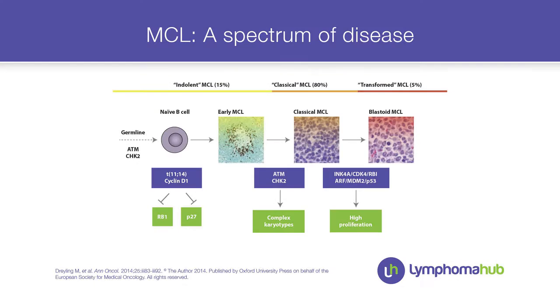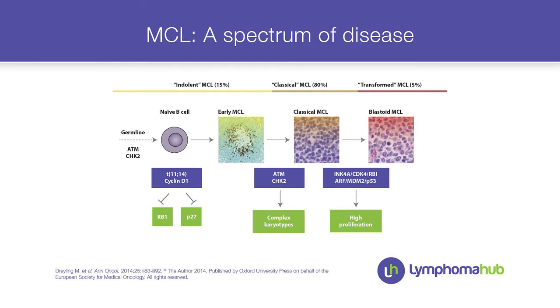What is special about mantle cell lymphoma? We have to be aware that this is a spectrum of disease. There are some indolent cases, but it's fair to say these only represent 10% of cases. The majority have initial high response rates but a continuous relapse pattern, and we also have the blastoid variant,